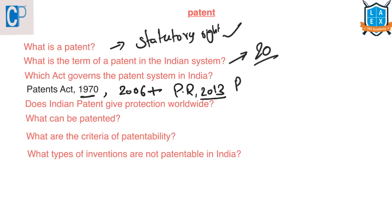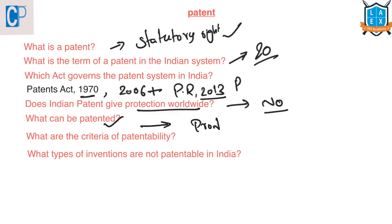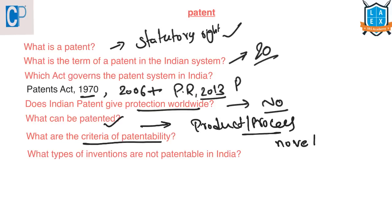Does the Indian patent system give protection worldwide? No. The patent protection is a territorial right and it is effective only within the territory of India. What can be patented? An invention that is related either to a product or process that is new, involving an inventive step, and capable of industrial application. It should be novel, new, have an inventive step, and be capable of industrial application.